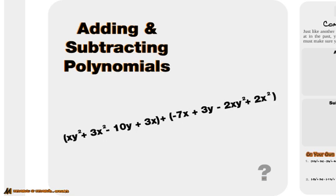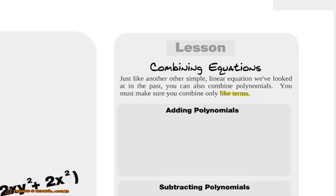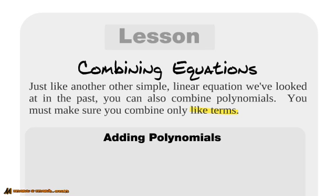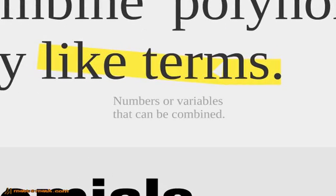We have an equation like this — there are way too many letters there, but you're going to be required to add and subtract these together and combine them, so let's learn how to do that. It's pretty basic as long as you understand what like terms are. Like terms — if you don't know what like terms are, they're numbers or variables that can be combined. Numbers can be combined with other numbers. One can be combined with negative one. X can be combined with negative three x, but negative three x can't be combined with one.